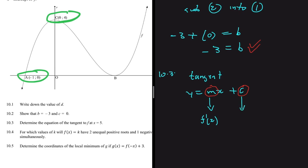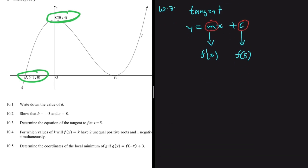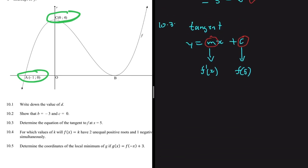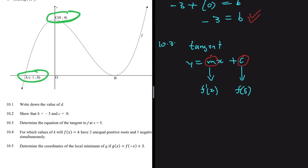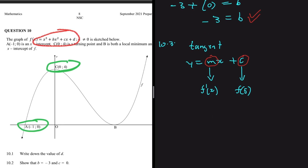To find the gradient, we'll use f'(x) and substitute x = 5. To find the point, we substitute x = 5 into f(x) to get the corresponding y-value. Now, with b = -3, c = 0, and d = 4, our function is f(x) = x³ - 3x² + 4.